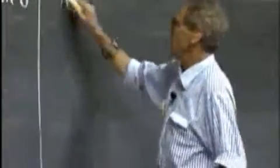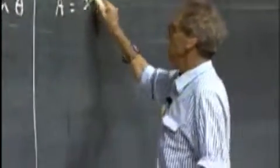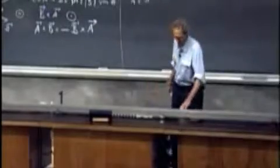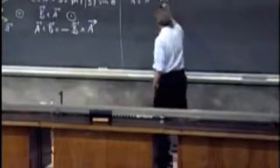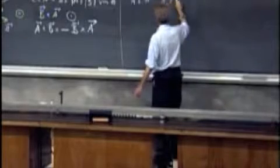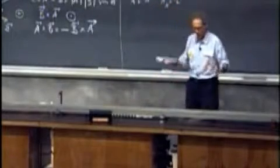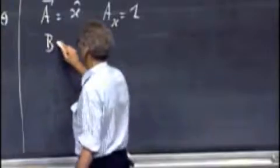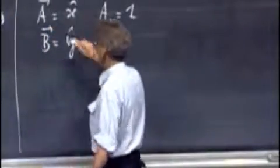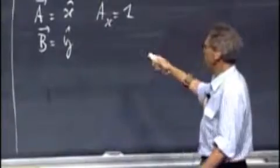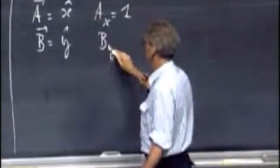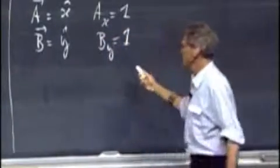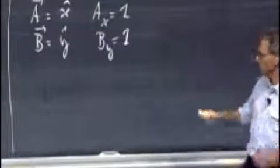Suppose I gave the vector a is x-roof. It's a unit vector in the x-direction. That means a of x is 1, and a of y is 0, and a of z is 0. And suppose b is y-roof. That means b of y is 1, and b of x is 0, and b of z is 0.